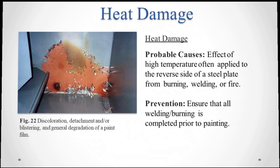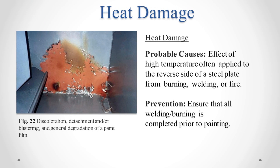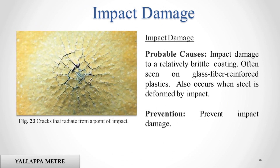Heat Damage. Probable causes: excessive high temperature often applied to the reverse side of a steel plate from burning, welding, or fire. Prevention: ensure that all welding/burning is completed prior to painting. Impact Damage. Probable causes: impact damage to a relatively brittle coating, often seen on glass fiber reinforced plastics. Also occurs when steel is deformed by impact. Prevention: prevent impact damage.